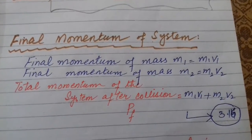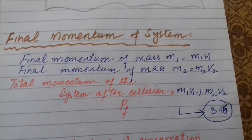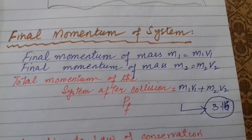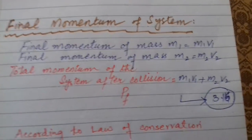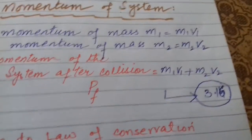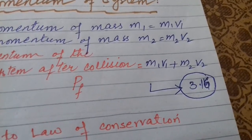Final momentum of mass M1 is equal to M1V1. Final momentum of mass M2 is M2V2. Total momentum of the system after collision, which can be denoted by Pf, is M1V1 plus M2V2.